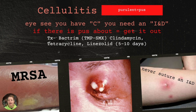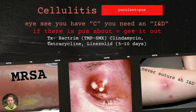In comparison, purulent cellulitis has pus, and we're going to think MRSA — methicillin-resistant Staphylococcus aureus. The saying for this one is: 'I see you have a C, you need an IND.' If there's pus about, get it out — that's a key phrase. So we're going to do an incision and drainage (IND). Treatment for purulent cellulitis is going to be Bactrim, clindamycin, tetracycline, or linezolid for five to ten days.